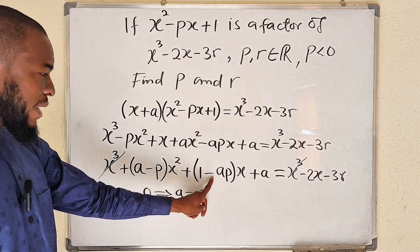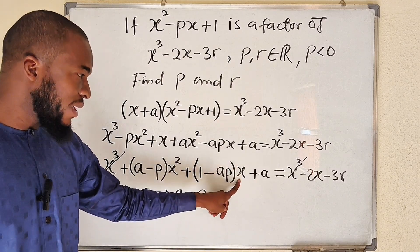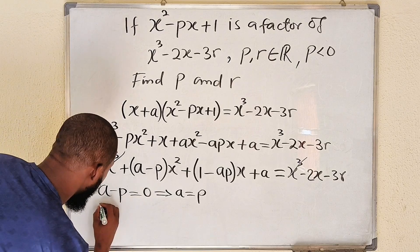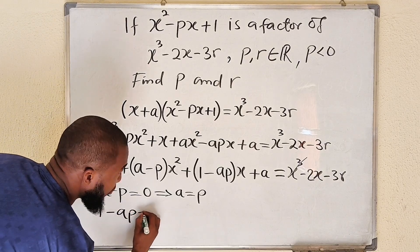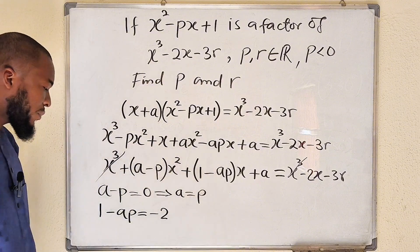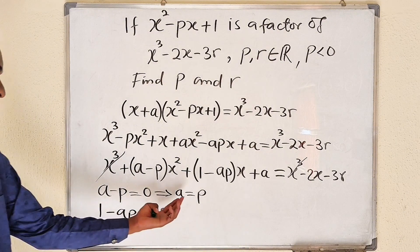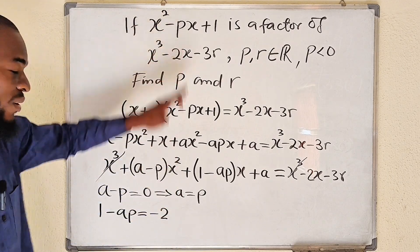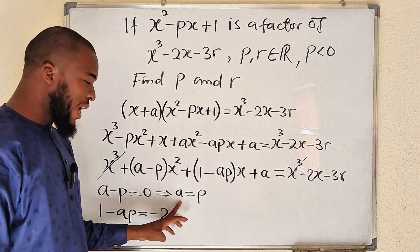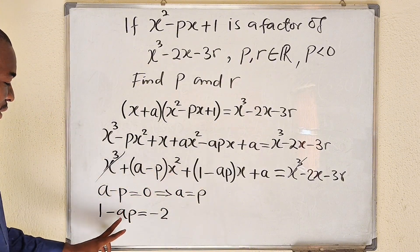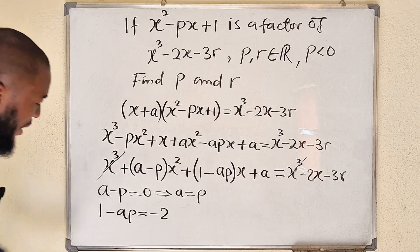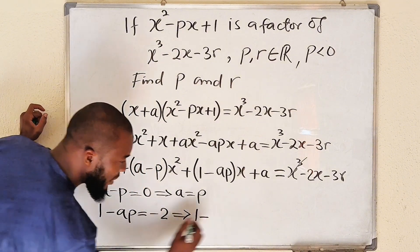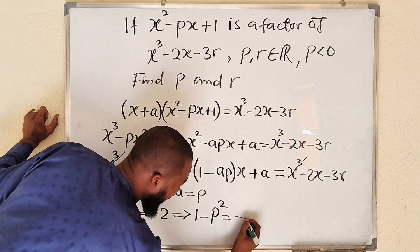Then 1 minus ap, which is the coefficient of x to the left, must be equal to negative 2, the coefficient of x to the right. So 1 minus ap must be equal to negative 2. But we have seen that both a and p are equal. Therefore, we can replace this a with p. Since what is given to us is in terms of p, not a. I was the one that introduced a. So I have seen that a and p are exactly the same. So therefore, I consider that this is also p, which means that 1 minus p times p is p squared equals negative 2.